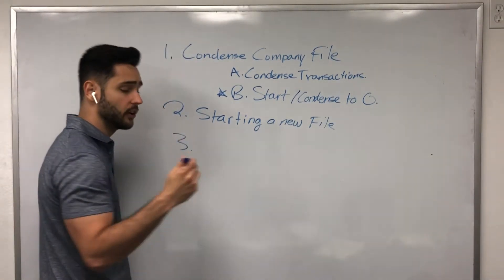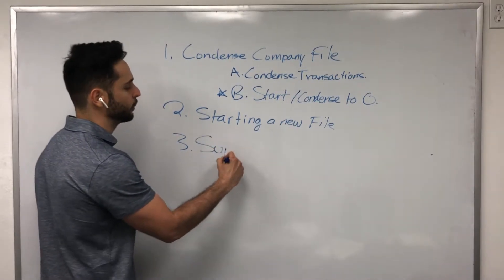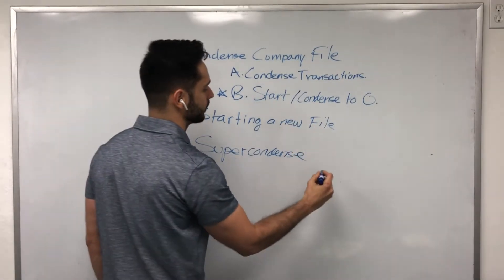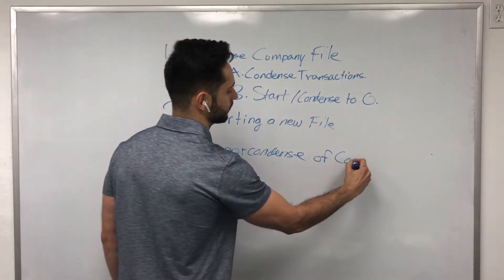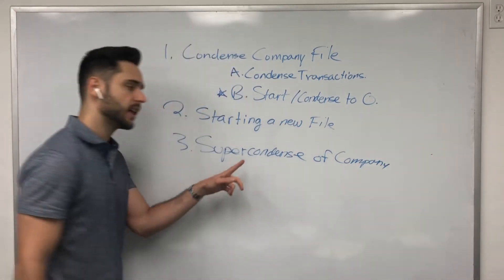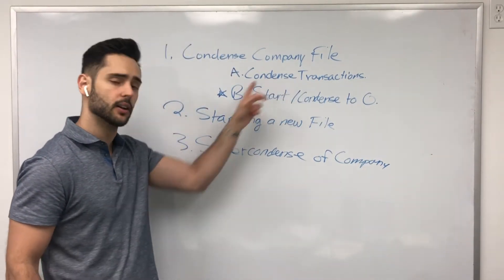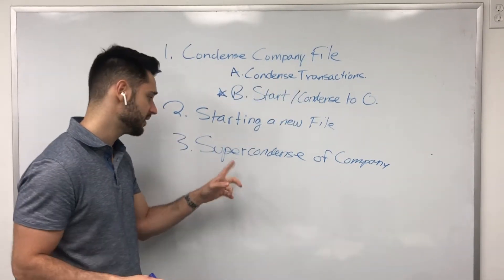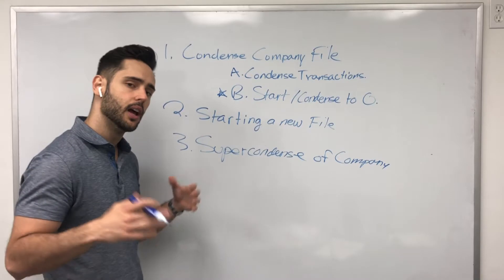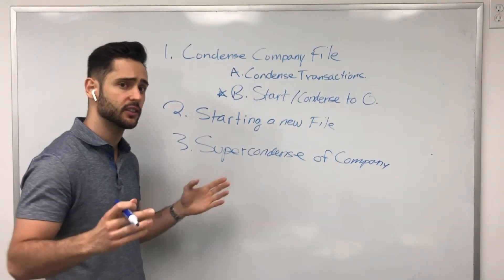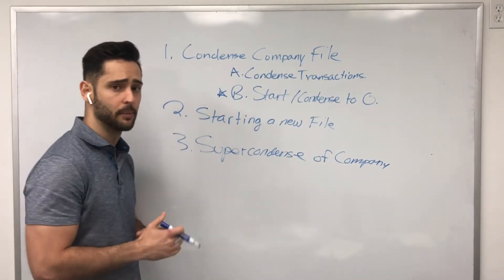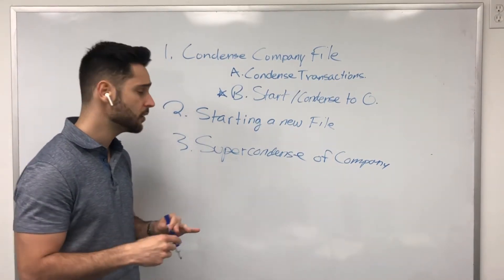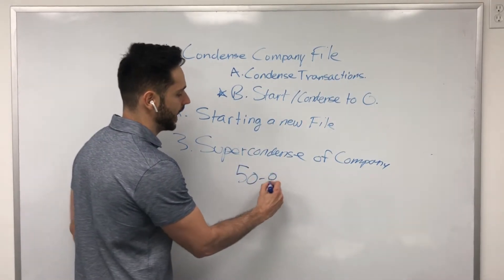Approach number three is there are some services out there that offer a super condense of the company file. Now, you should only utilize this super condense when the regular condense doesn't work. When you go and do a regular condense and it shrinks your file by 10 megabytes, now it's time to think about a super condense. A super condense is going to take all the closed transactions from previous years, and it's going to wipe them. And when I say it's going to wipe them, I mean it's going to eliminate them from the company file, decreasing the company by 50 to 80 percent.